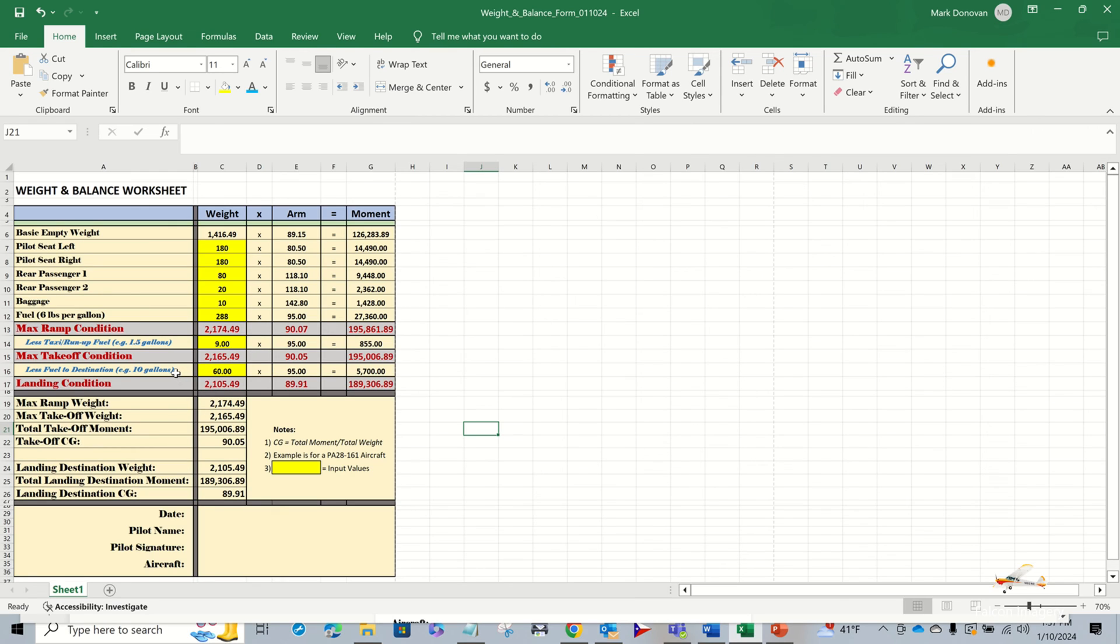Then for this particular cross-country flight, we assume we burned 10 gallons of fuel in that flight. 10 times 6 pounds per gallon is 60. We're going to subtract that 60 from our takeoff weight to know what our landing condition is. And similarly, we're going to take that 60 pounds times 95 for the arm associated with the fuel tanks. That's 5,700. I'm going to subtract that from the max takeoff condition moment. And what we result in is we get a less weight when we arrive at our destination, 2,105 pounds, and a lighter moment or smaller moment. And we take the moment divided by the weight, we get this arm of 89.91 inches. And what you can see, the arm is slowly moving forward as we lose more fuel.